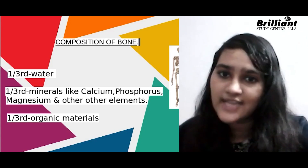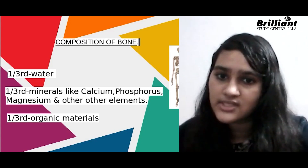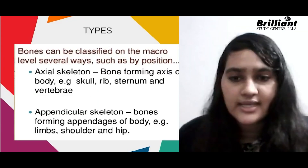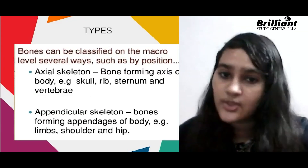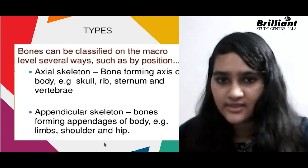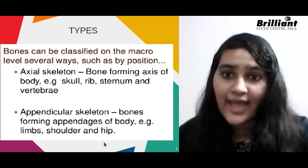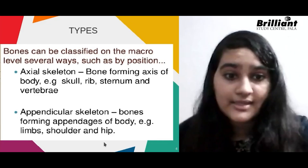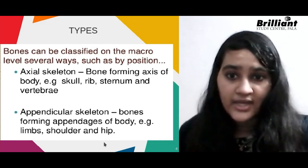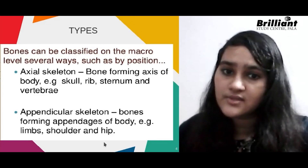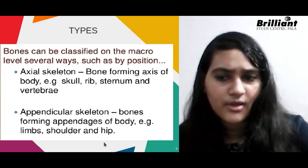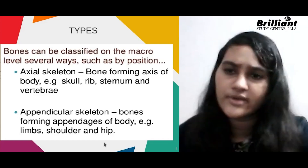The next topic is the types of bones. There are two types: axial skeleton and appendicular skeleton. For example, the axial skeleton includes the skull, and the appendicular skeleton includes the limbs and shoulder.